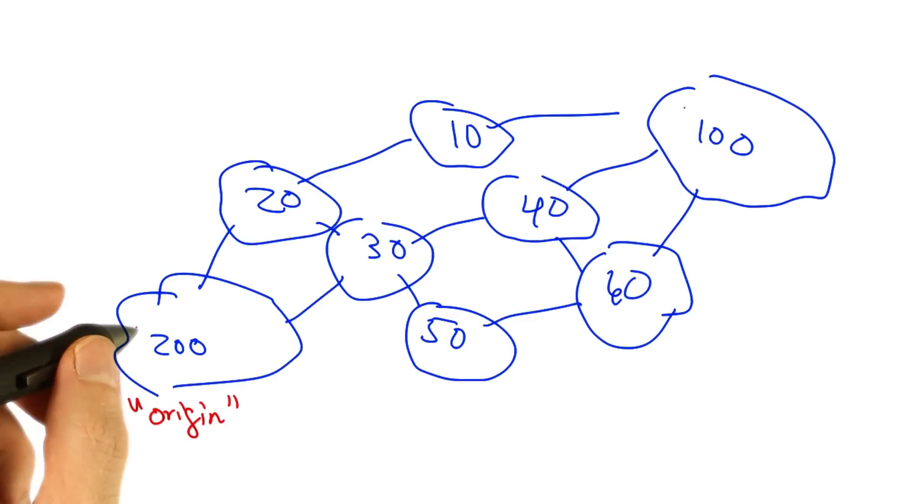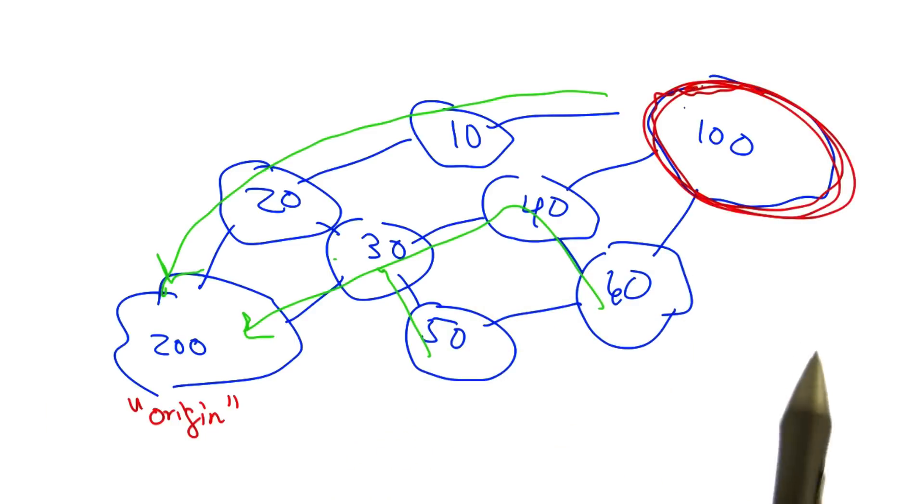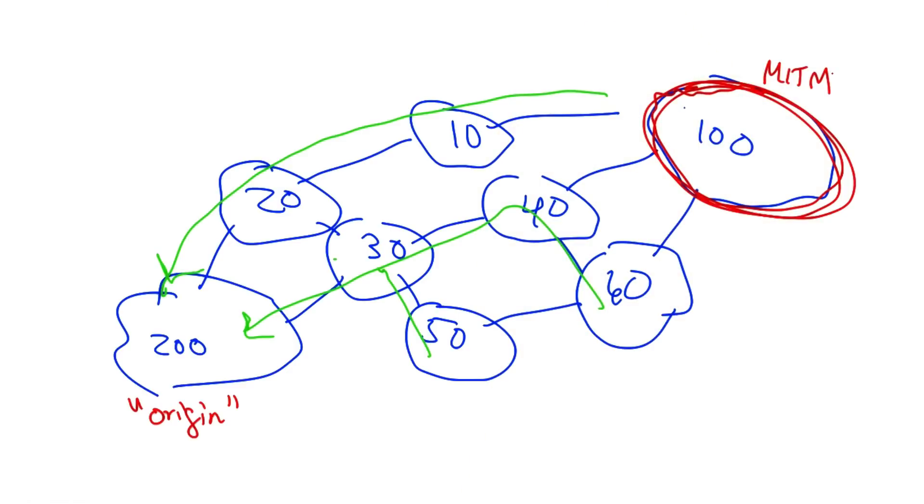Let's suppose that AS200 originates a prefix and that the paths that result from the original BGP routing are shown in green. Let's now suppose that AS100 seeks to become a man in the middle.